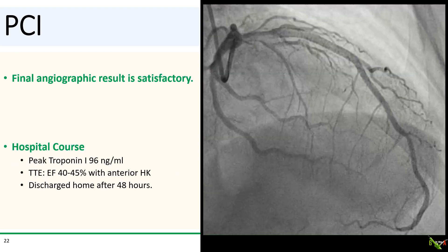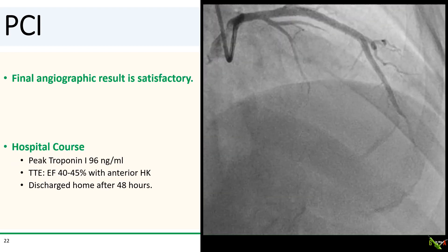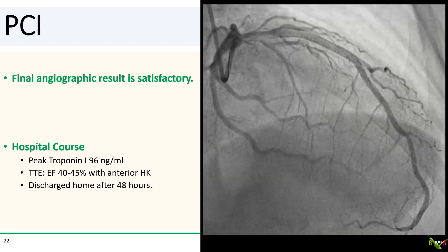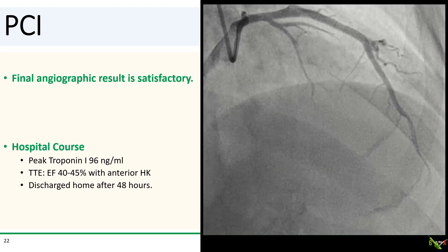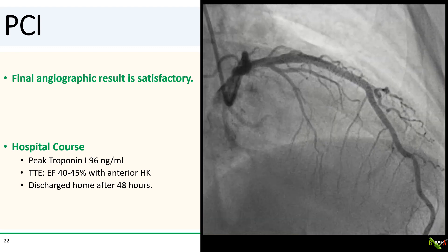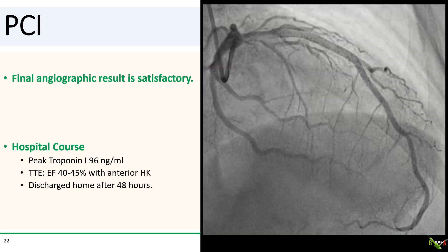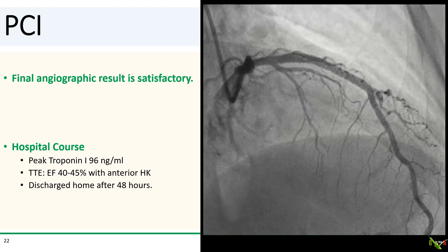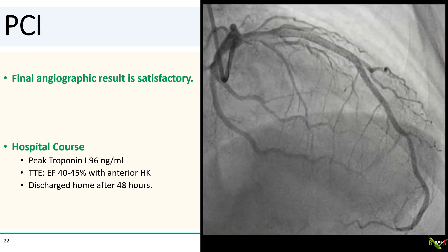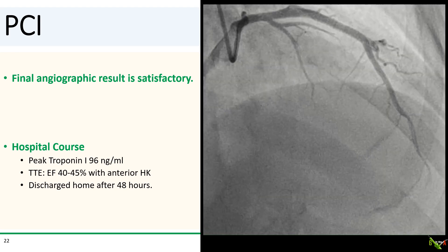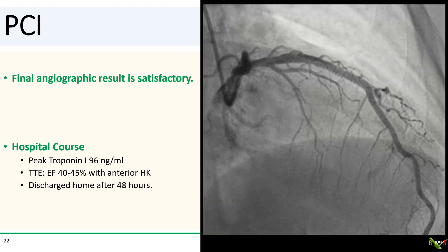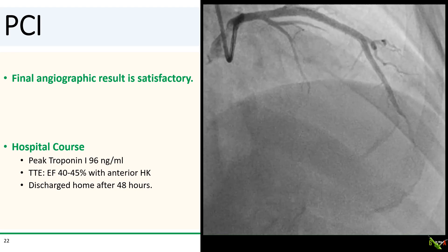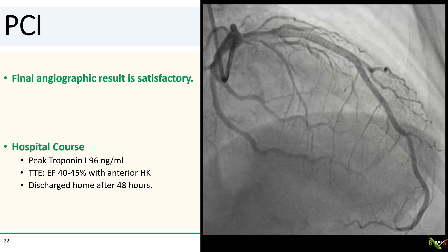Here is the final angiographic result, which is quite satisfactory. The patient did well — his troponin peaked at 96 and his echo showed only mild anterior dysfunction. He went home in good condition a couple of days later.